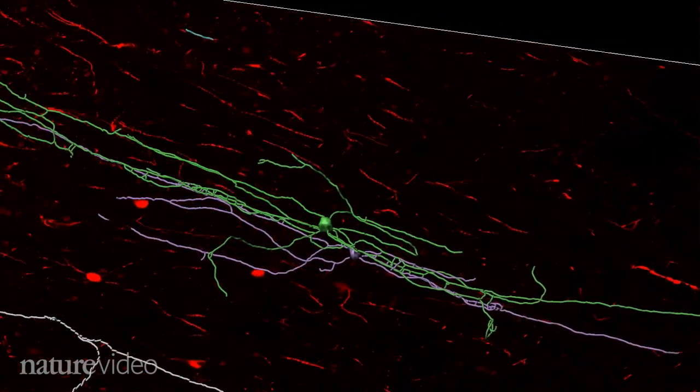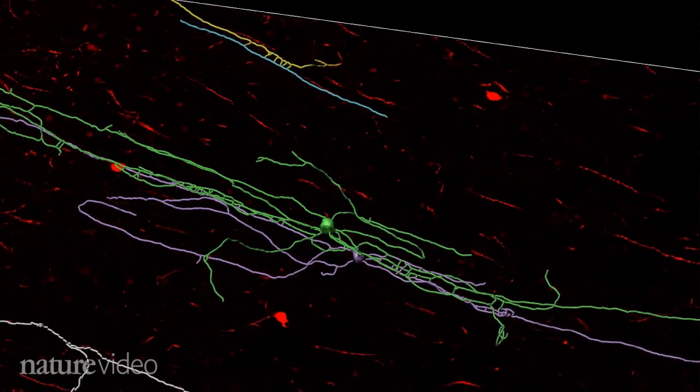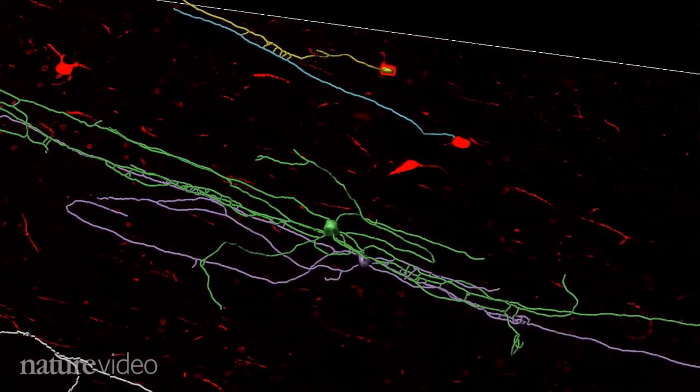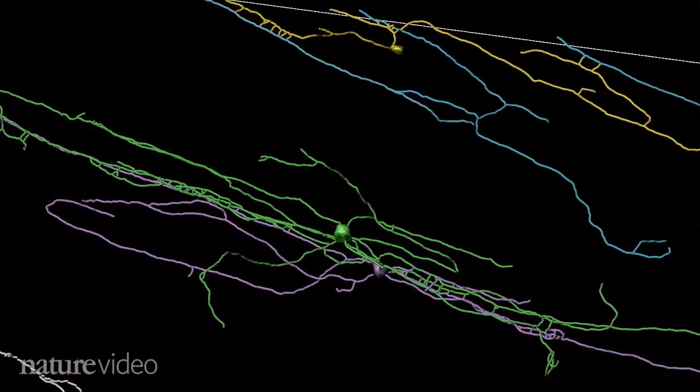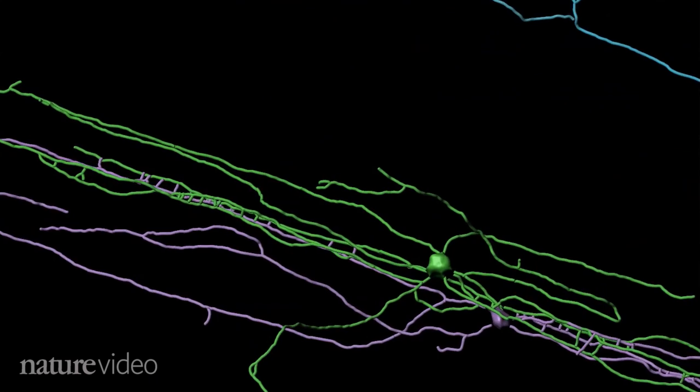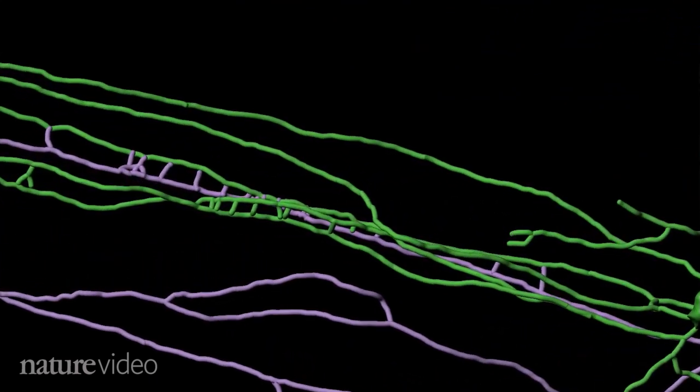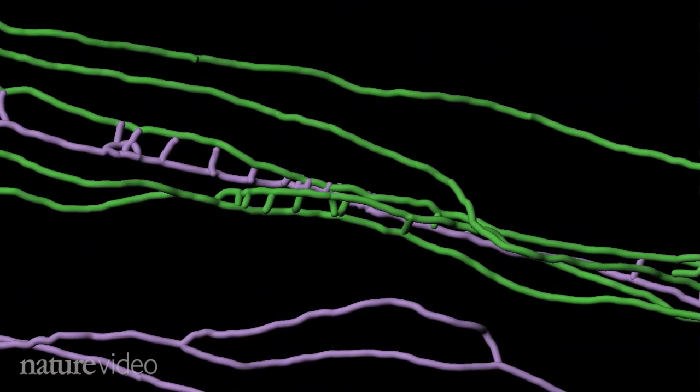When the team looked closely in one layer of the cortex, they noticed ladder-like patterns where neurons had connected back to themselves and to other neurons. Similar abnormal structures have been seen in animals with autism-like behaviors.